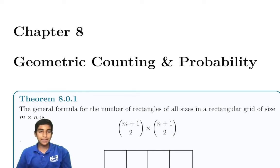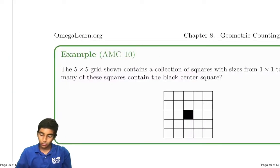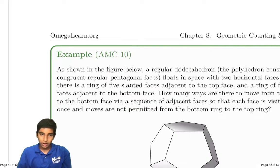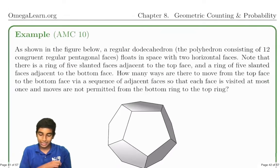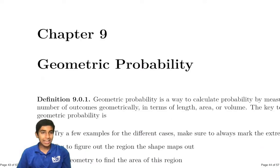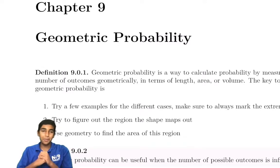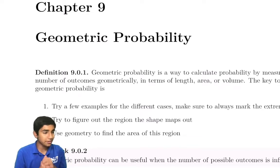Last time on Mastering AMC 10/12, we covered geometric counting, rectangles, counting squares, and various tricky tetrahedral and dodecahedral problems. But today, we're covering geometric probability. Sounds similar to geometric counting, but it actually is very different.